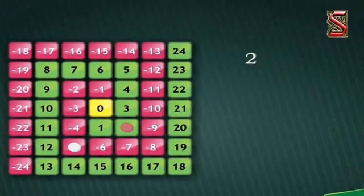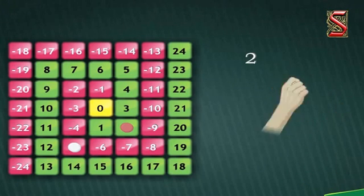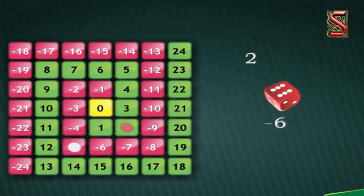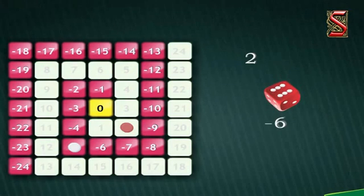It is Geeta's turn now. She has also taken out the red dice this time. She rolls it and gets a six. Red indicates a negative number. So she has to go backwards six times from where she is. That is number two. See where she has reached negative four?